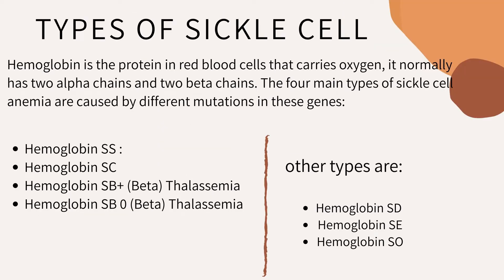Types of sickle cell: Hemoglobin is a protein in red blood cells that carries oxygen. It normally has two alpha chains and two beta chains. The four main types of sickle cell anemia are caused by different mutations in this gene. They are: Hemoglobin SS disease, Hemoglobin SC disease, Hemoglobin SB plus beta-thalassemia, and Hemoglobin SB zero beta-thalassemia. Other types include Hemoglobin SD, Hemoglobin SE, and Hemoglobin SO. These types are more rare and usually don't have severe symptoms. It is important you know the type of sickle cell disease that you have.